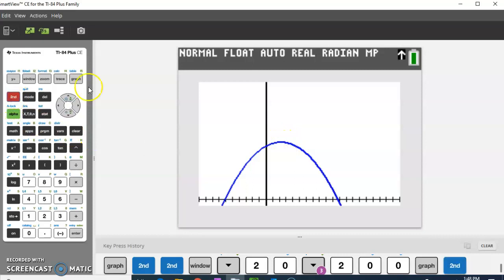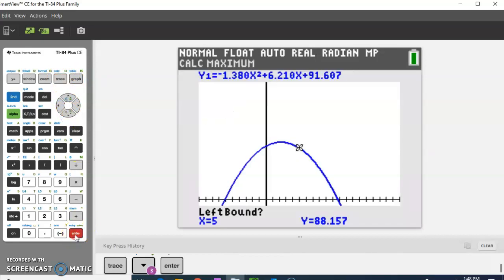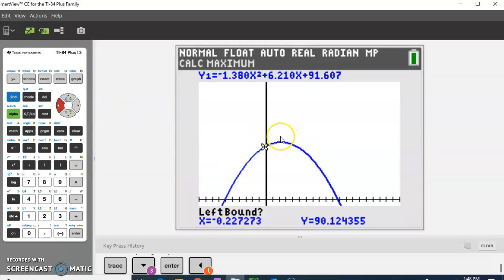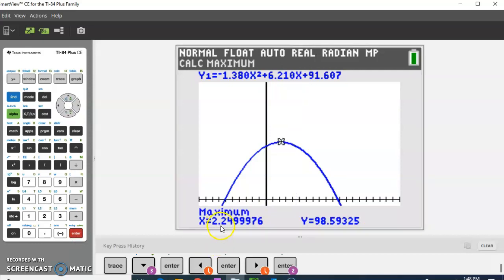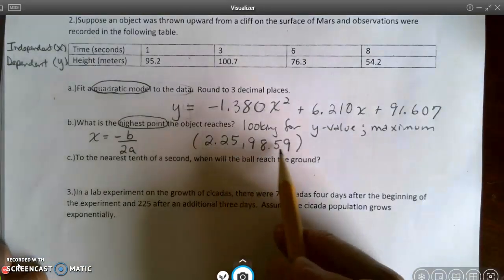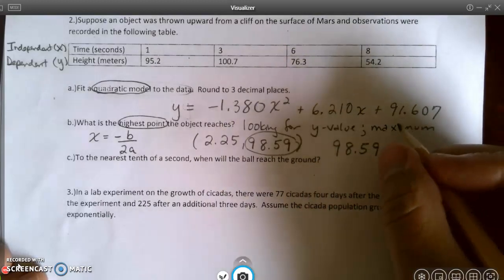And I want to find this right here. So I'm going to go to second trace. I'm going to ask for the maximum. Hit enter. And it says left bound. So I need to arrow to the left. As long as I'm to the left of that max, I can hit enter. Now I have to be to the right. Hit enter. I don't want the guess, so I hit enter again. And according to this, it's going to be at approximately 2.25 seconds. My height will be 98.59. So that's going to be my max height. And it's going to take me approximately 2.25 seconds. Okay, so this was the ordered pair. And the highest point was that y value. So it's going to be 98.59. And this is in meters.